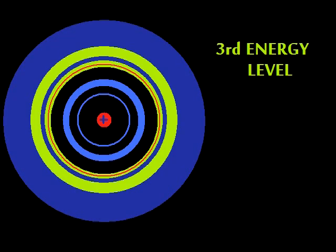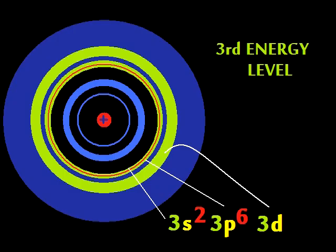The third shell is even larger still — an S and a P top the bill. A D sublevel is added on top: ten electrons can fit at a pop.